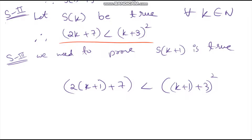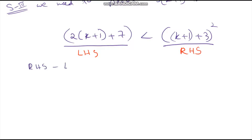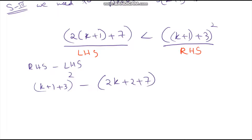So directly, S of k plus 1 is: 2 into (k plus 1) plus 7 is less than (k plus 1 plus 3) whole square. Let this be LHS and this be RHS. If we take RHS minus LHS, that is (k plus 1 plus 3) whole square minus 2 into (k plus 1) plus 7, this should be more than 0.